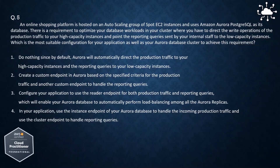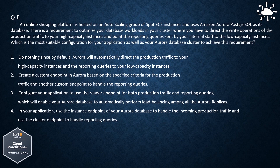Question 5. An online shopping platform is hosted on an auto-scaling group of Spot EC2 instances and uses Amazon Aurora PostgreSQL as its database. There is a requirement to optimize database workloads in your cluster where you must direct production traffic to high-capacity instances and point reporting queries from internal staff to low-capacity instances. Which is the most suitable configuration for your application and Aurora database cluster to achieve this requirement?